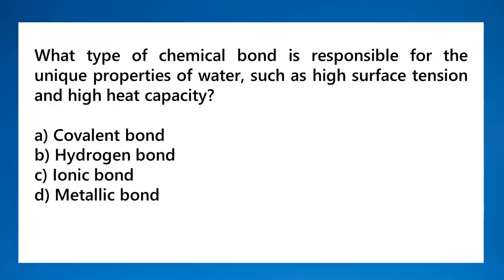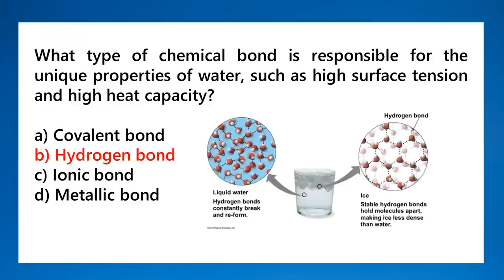What type of chemical bond is responsible for the unique properties of water, such as high surface tension and high heat capacity? That is the hydrogen bond. In liquid water, hydrogen bonds constantly break and reform. In ice, stable hydrogen bonds hold molecules apart, making ice less dense than liquid water. The unique properties of water are mainly due to hydrogen bonding.